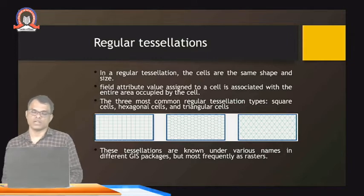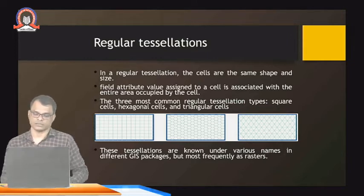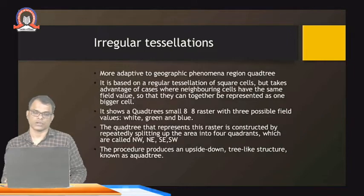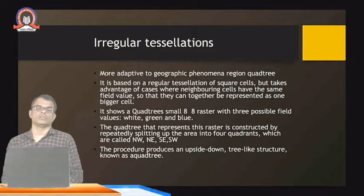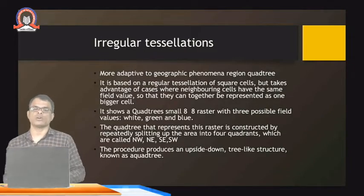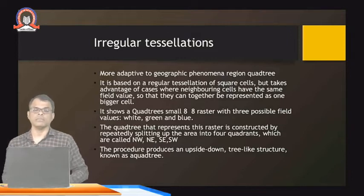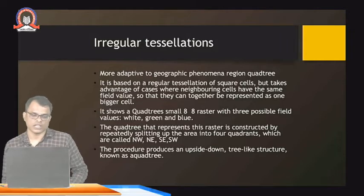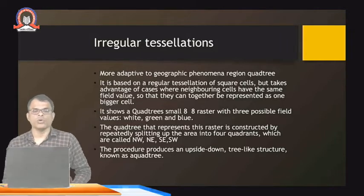These tessellations are known under various names in different GIS packages, but most frequently as raster. So if cells are of a regular size, the representation is most frequently known as raster. In irregular tessellation, the shapes are the same but the sizes are not — that is called irregular tessellation, which is more adaptive to geographic phenomena.